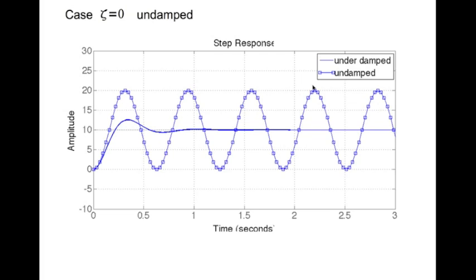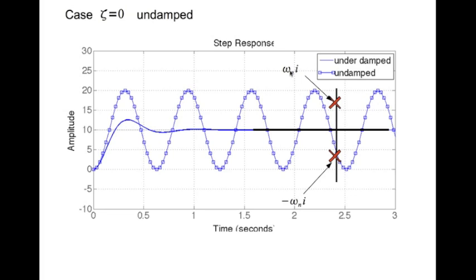For comparison, I have put the underdamped case next to it. If you look at the poles of this transfer function, they lie on the imaginary axis. This is the zero-damped or undamped case — the top pole is at omega_n * i and the bottom pole is at minus omega_n * i.